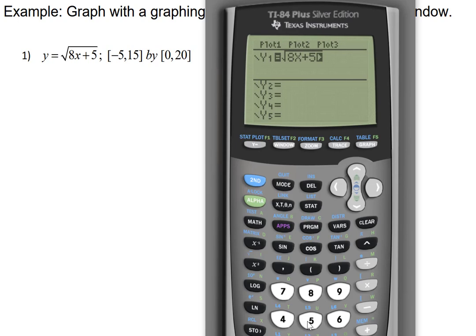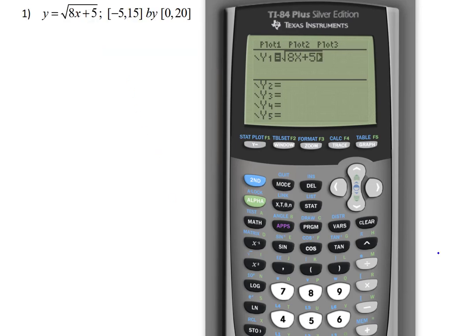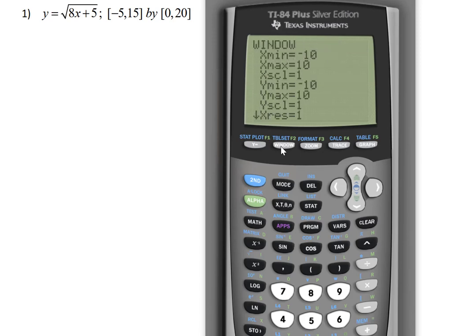Now, this particular problem also specified a viewing window. To adjust the viewing window, we'll go ahead and press the window button, which is to the right of the y equals button on the top row of buttons. When we press window, it gives us a range of options here. And given that this problem specifies a window of first negative 5 comma 15. That refers to the x range, meaning the x min should be negative 5. Now, the default is set to negative 10. We'll change that simply by typing in negative 5. And then the x max we'd like to be 15.